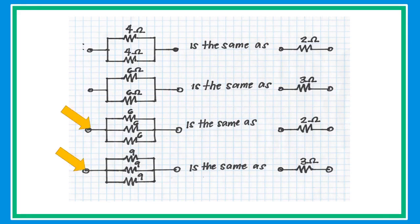If you have three or more resistors connected in parallel with the same value, simply divide the resistor value by the total number of resistors. This applies whether you have 4, 5, or 10 resistors connected in parallel — just divide the value by the number of resistors.